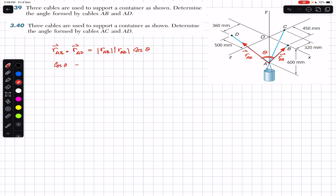We can rearrange this equation and say that cos(theta) equals the dot product of R_AB and R_AD divided by their magnitudes. Taking cos inverse will give us the angle theta. So theta equals cos inverse of this fraction. This is our main equation — let's call it equation one.